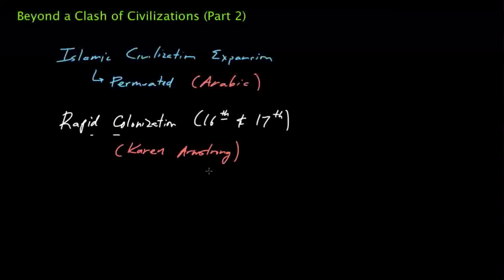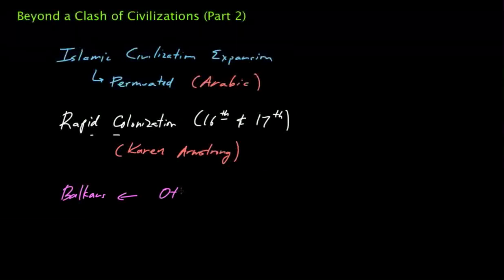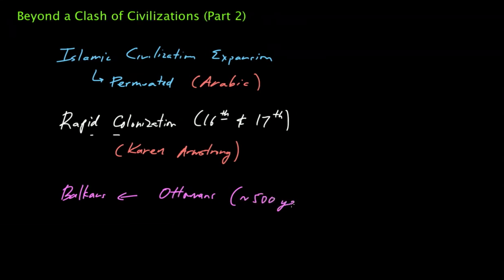It's important to keep in mind that the Muslim presence in these regions is not new. Muslims have been, in particular in the Balkans, let me kind of write this down. In the Balkans in particular, there's been a Muslim presence since the Ottoman times, so since the Ottomans. We're talking about 500 or so years ago. So it's not a new phenomenon by any stretch of the imagination.